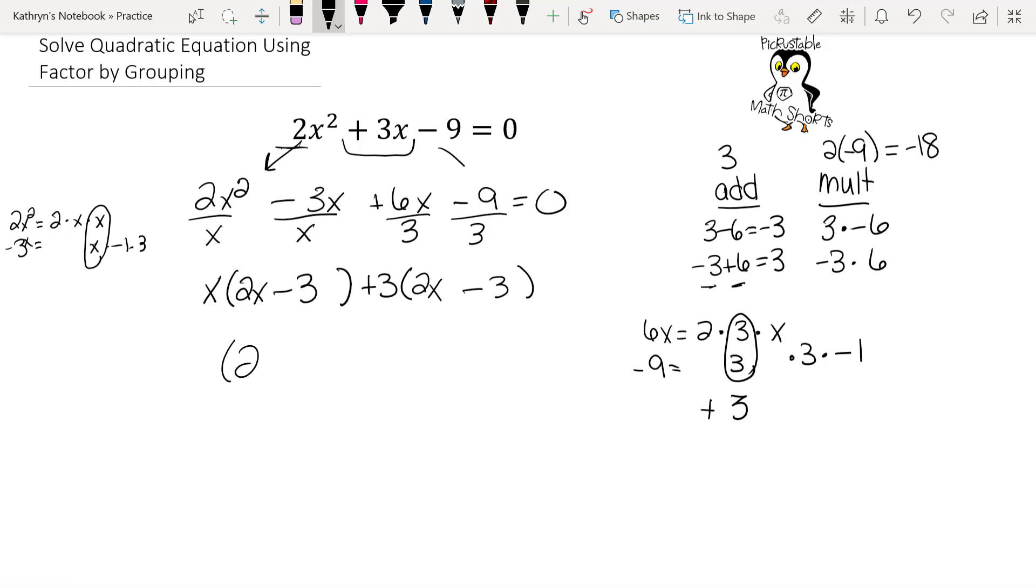I'm going to write 2x minus 3. So basically I'm factoring out 2x minus 3. So if I take out 2x minus 3, I'm left with an x. If I take out 2x minus 3, I'm left with a plus 3, and we still have equal 0. Now at this point, we can check this by foiling, and when you foil, you should get back to 2x squared plus 3x minus 9.